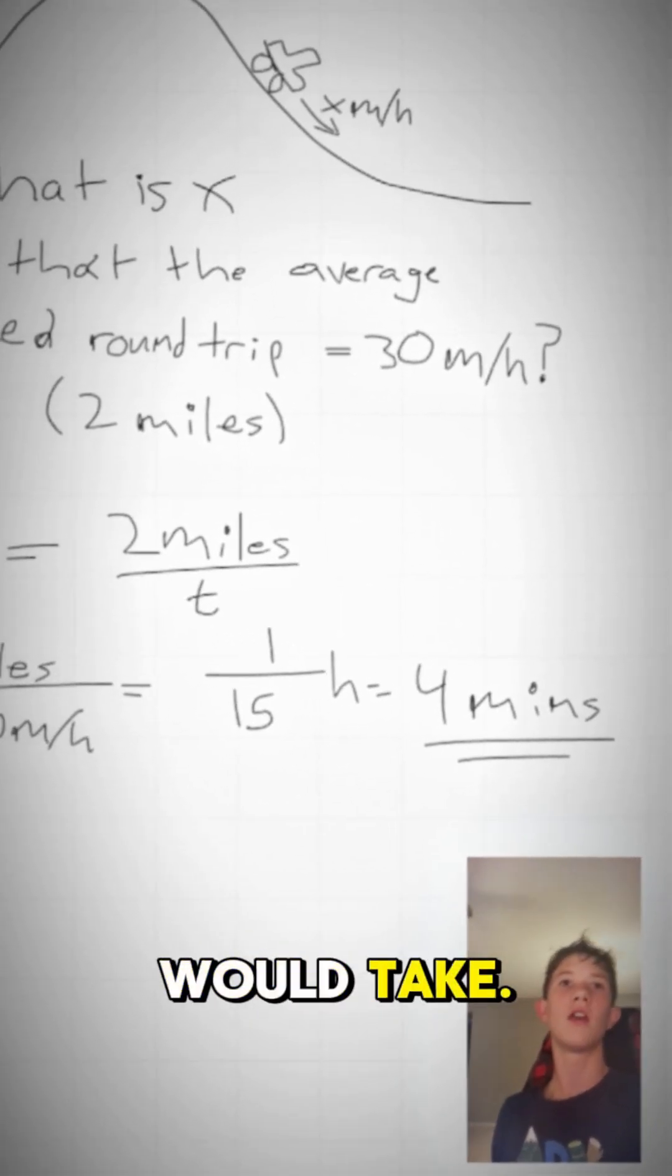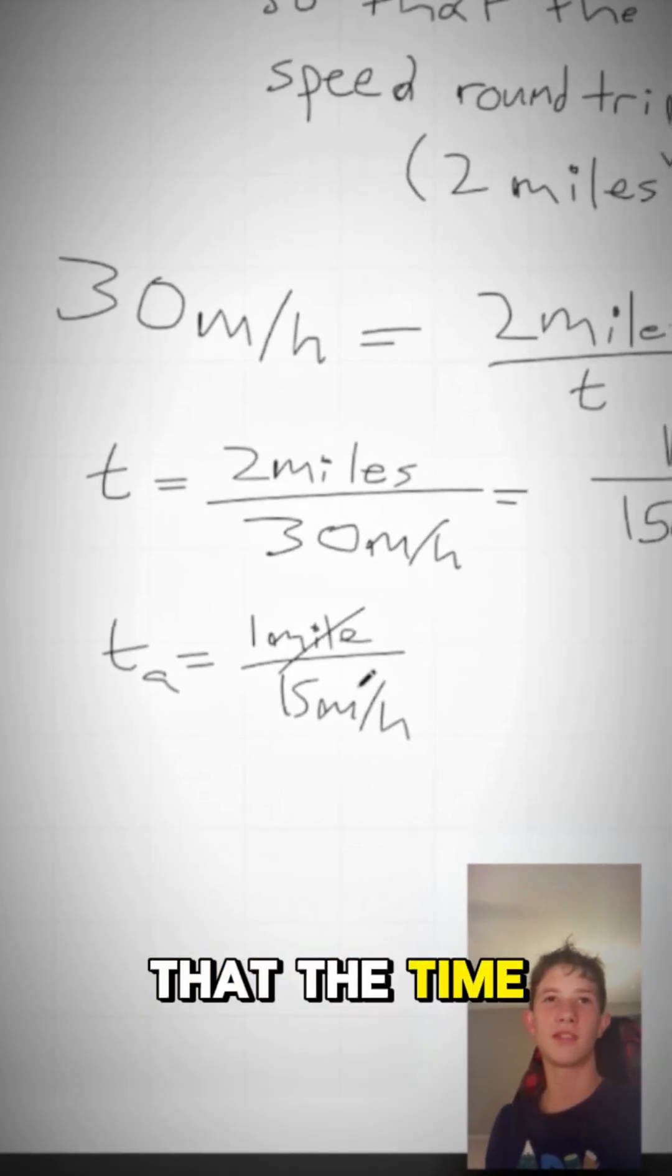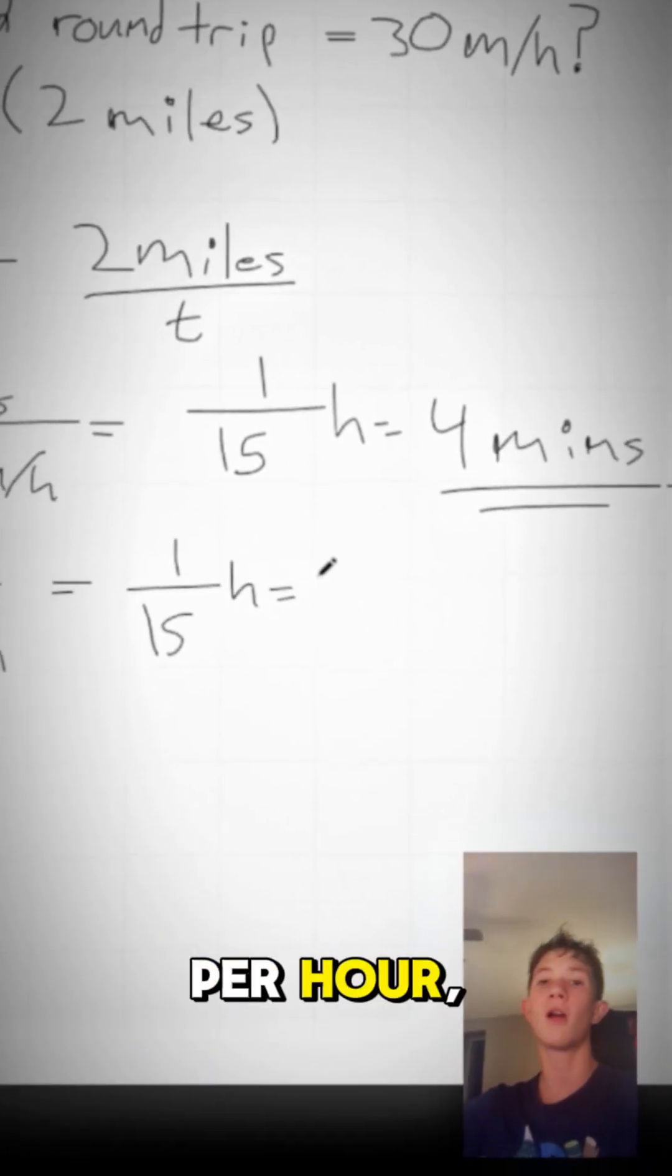Let's see how long the ascent on its own would take. We know that you went 15 miles per hour over 1 mile. To calculate the time, we would say that the time of the ascent equals 1 mile over 15 miles per hour, or 4 minutes.